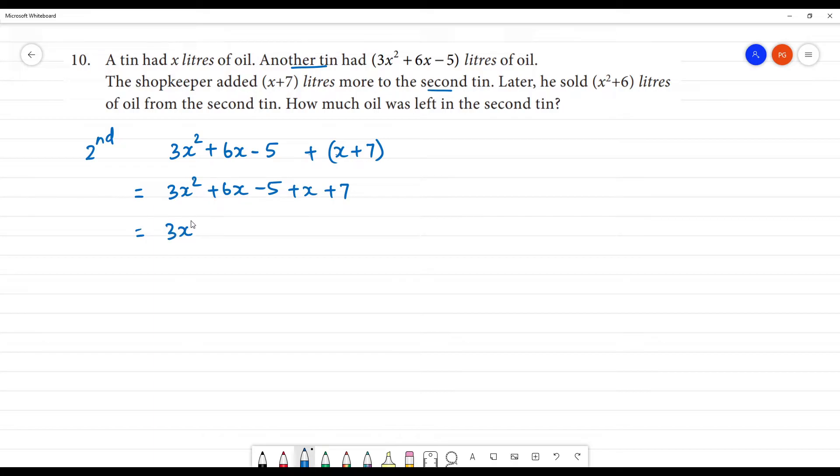We add 3x². We don't have 3x². We have 6x and we have plus x. So, we have 6x plus x is 7x.